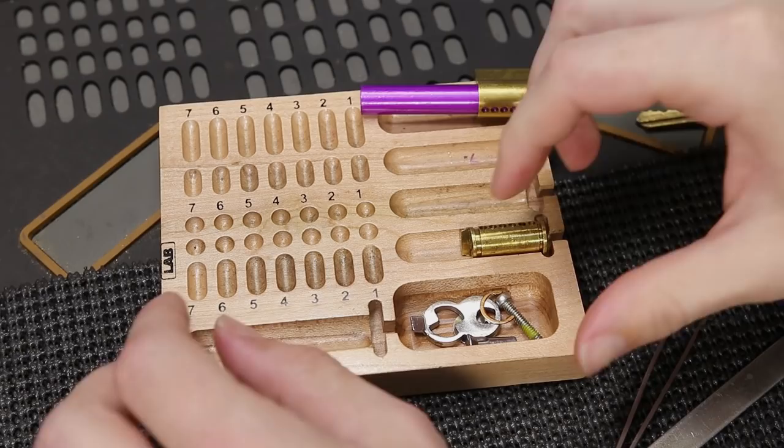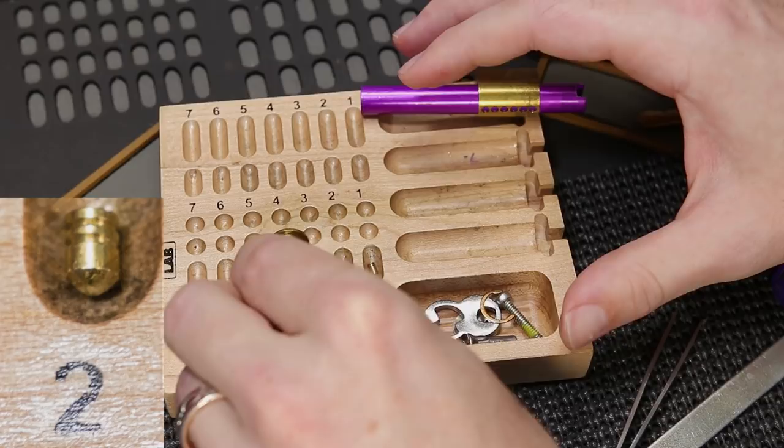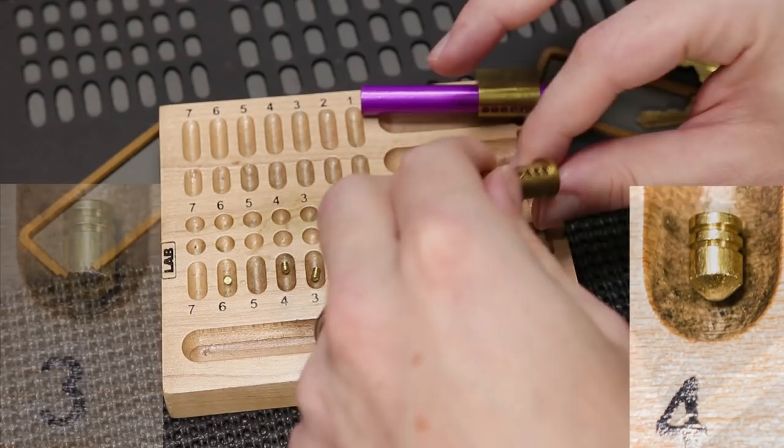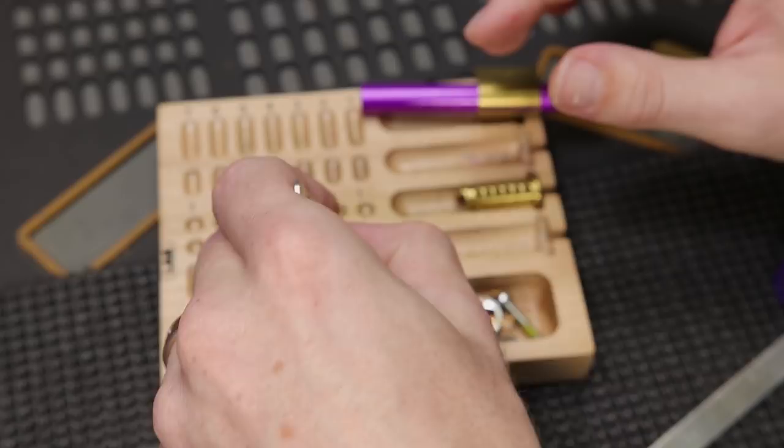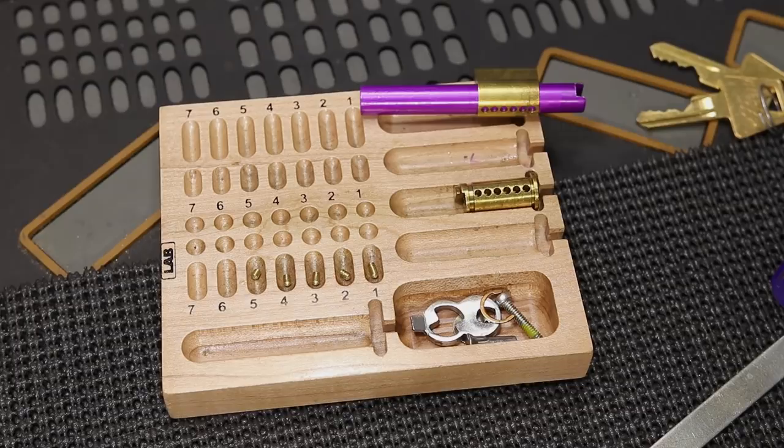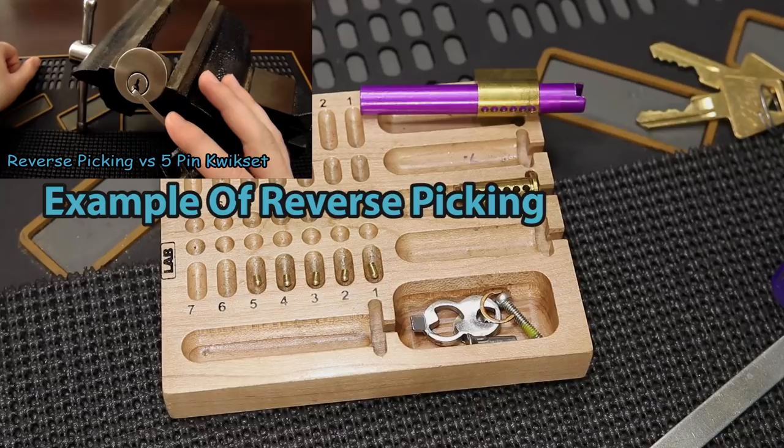All right so starting with key pin number one that is a serrated key pin and we have key pin number two serrated, three serrated, four serrated, and five is one of these shorter key pins so that one is not serrated. So you have to remember with American locks the shortest two lengths on their key pins are not serrated because they are just too short to add them. And the serrations add a very important function to the lock. They make a concept called reverse picking a lot more difficult because they stay over set when you use that technique. And I've made a video on that before that I can link up on the top for you.